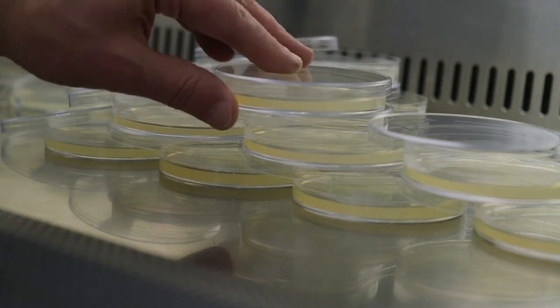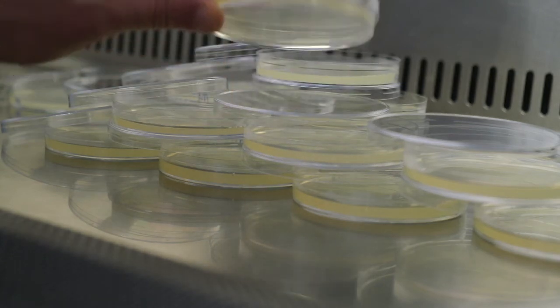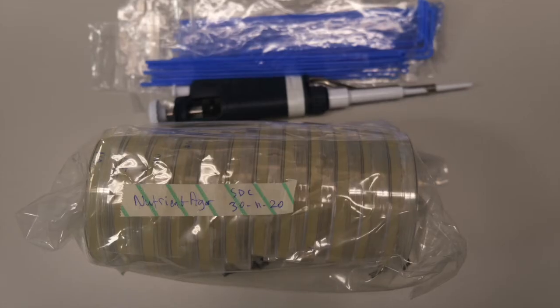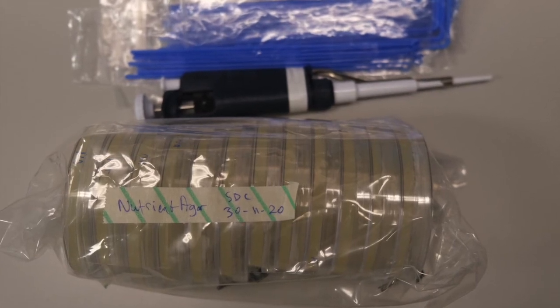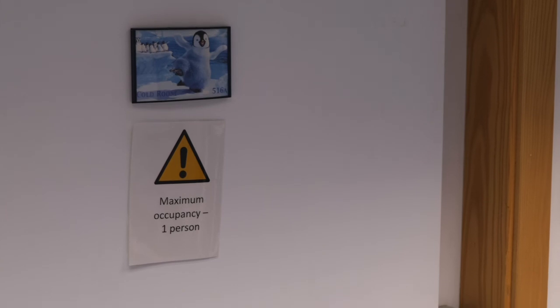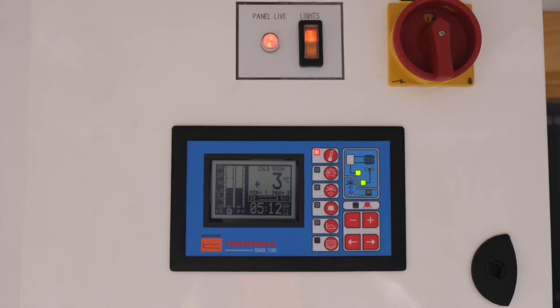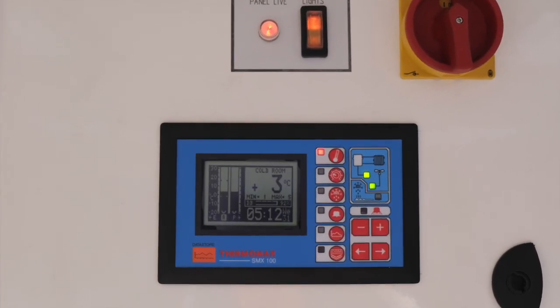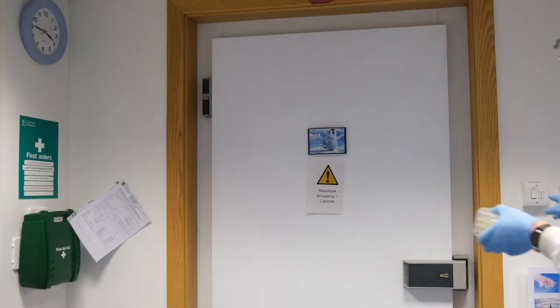We can put a lid on and turn it upside down and it will remain in the plate. We can put our plates in a plastic bag and put them in the cold room. Here they can be stored at 3 to 4 degrees centigrade for up to one or two weeks.